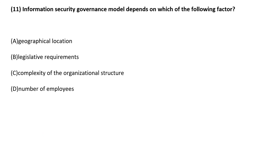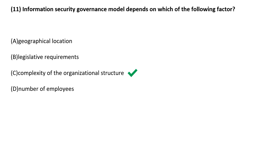Information security governance model depends on which of the following factors? Complexity of the organizational structure. Information security governance models are highly dependent on overall organizational structure and complexity of the organization.